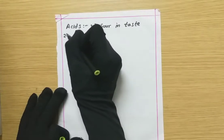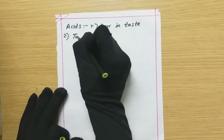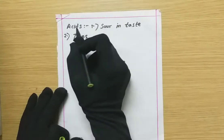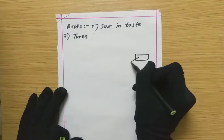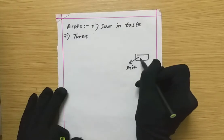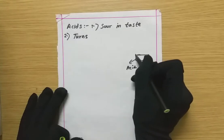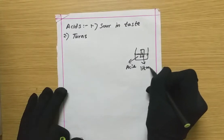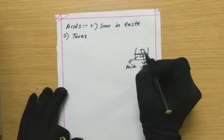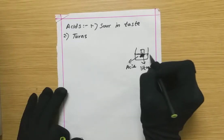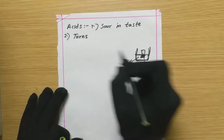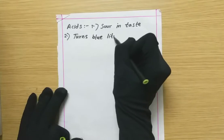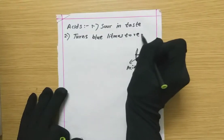Acids are sour in taste. Then, if you take a litmus paper — which is an indicator — and test a substance which is an acid, we dip a blue litmus paper into the acidic solution. It should turn red. So always, acids turn blue litmus to red. That indicates it is an acid.